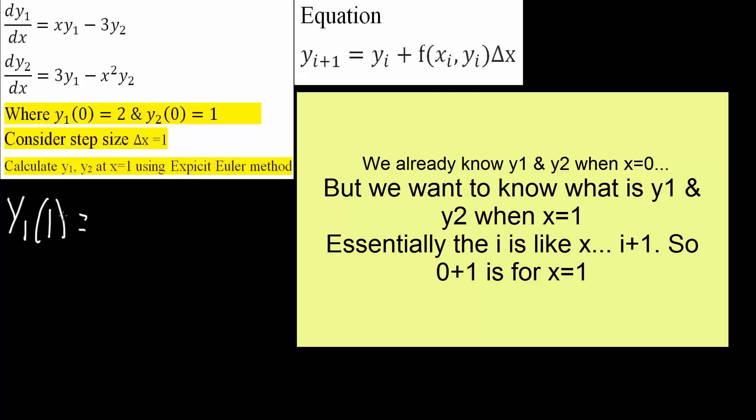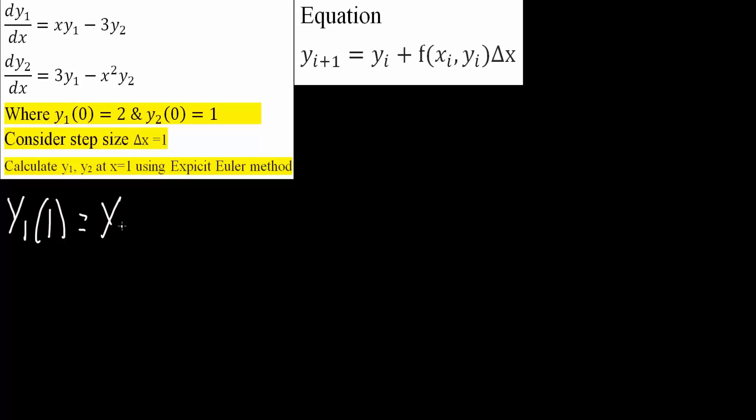And we also know the value when x is 0. It's going to be this. So this is going to be y1(0), which would ultimately be 2. Plus this equation right here, f(xi, xi is the value we know, which is 0, comma yi. When x is 0, y is 2, so comma 2.